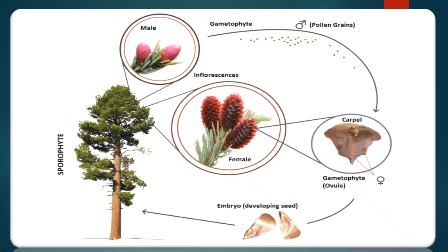Food for the developing embryo is provided by a massive starch-filled female gametophyte that surrounds it. You can observe here this sporophytic body, showing the inflorescence female, pollen grains, and how they fuse with each other to produce the embryo.